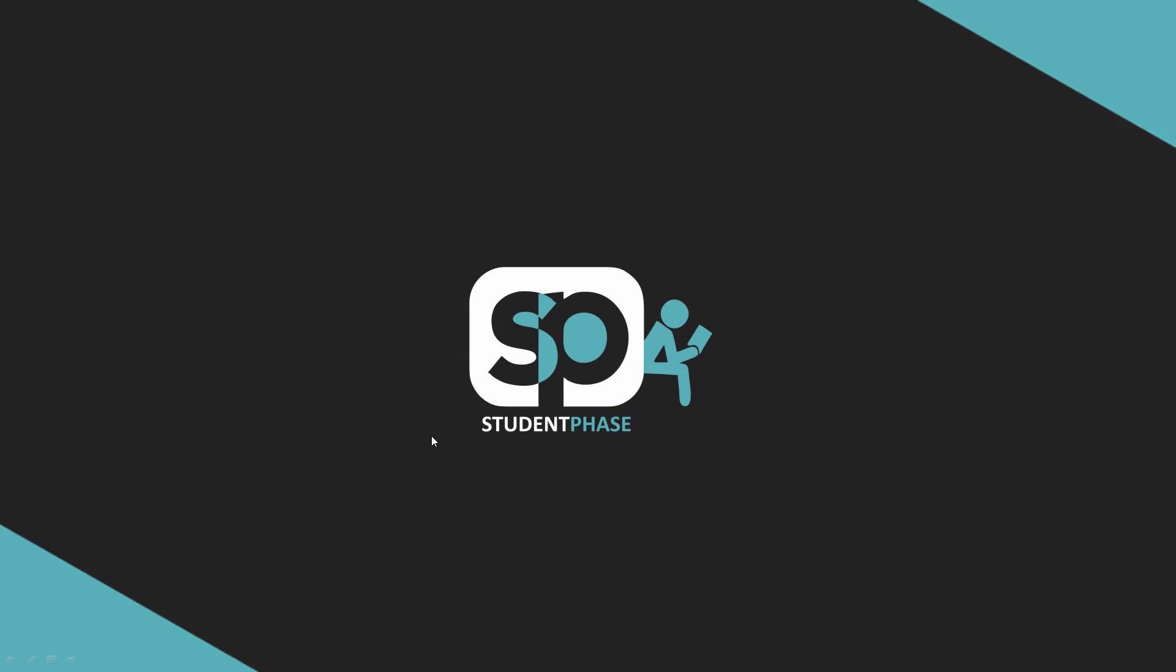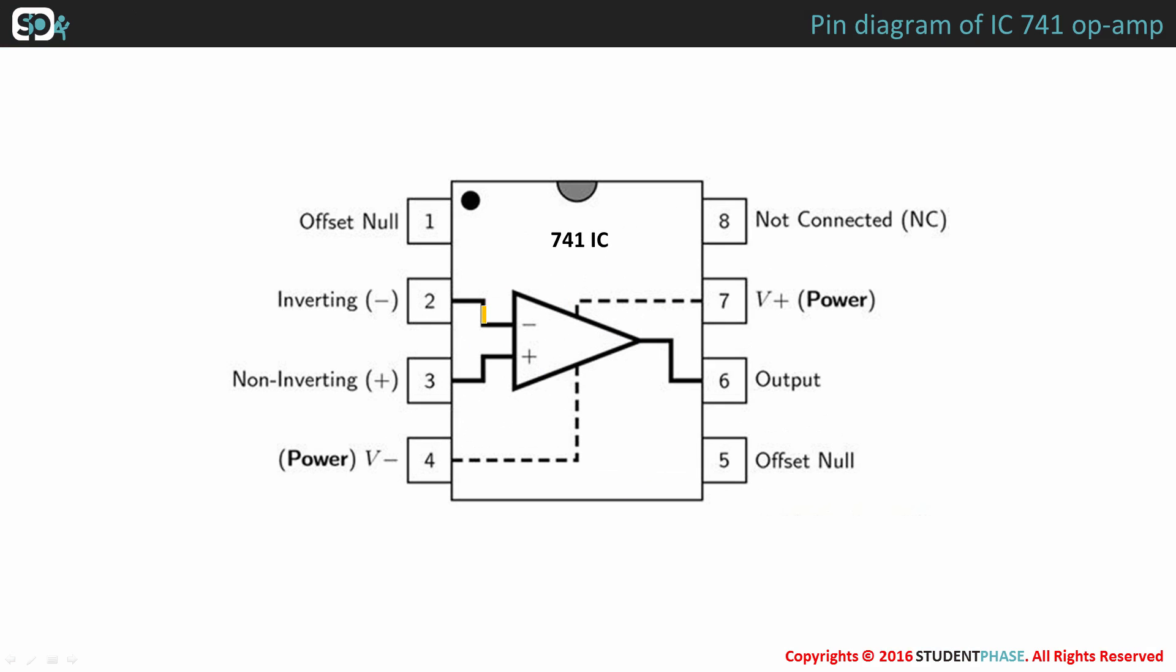This is an IC741 operational amplifier. It has 8 pins. Pin 1 and 5 are offset null pins. They are used to balance offset voltages or to null.